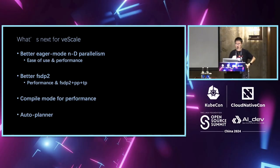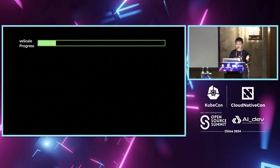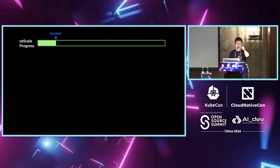We will continue working on eager mode execution to improve performance and ease of use. We will also work on FSDP2, which is relatively new in upstream PyTorch, and try to improve it on performance and ease of use. We will also have people working on compile mode and the auto planner. It's a long way ahead — there are a lot of things to do, and none of these items are easy.